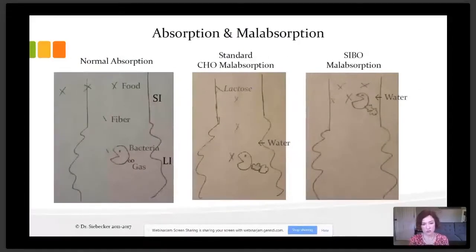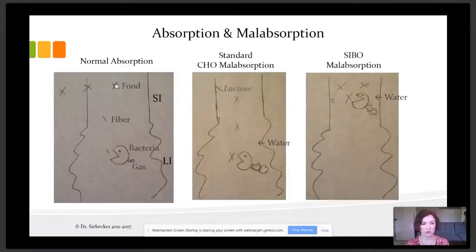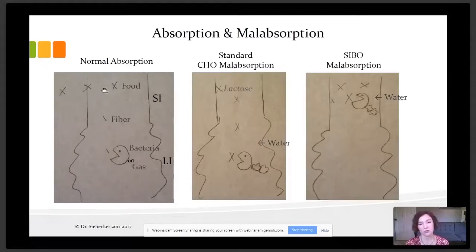Here I've shown what normal absorption should look like compared to standard carbohydrate malabsorption and SIBO malabsorption. In the first picture, the X's represent food, this part is the small intestine, and this part is the large intestine. When food comes in normally, it's digested and absorbed across the lining.